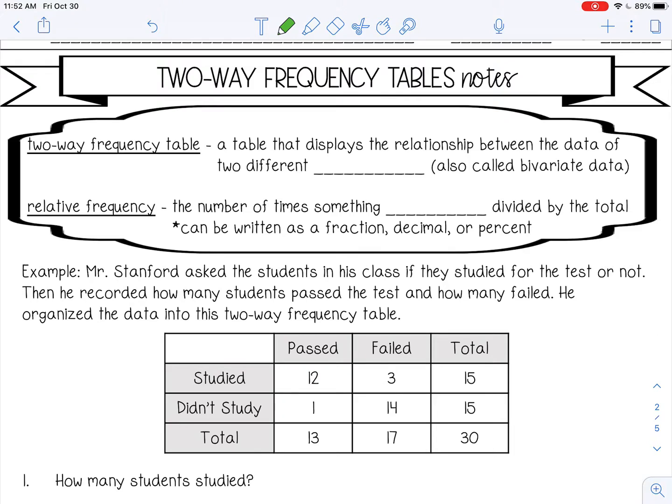Welcome to this lesson on two-way frequency tables. A two-way frequency table is a table that displays the relationship between the data of two different variables, also called bivariate data. Relative frequency is the number of times something occurs divided by the total, and can be written as a fraction, a decimal, or a percent.